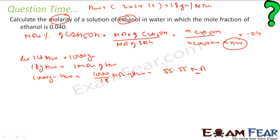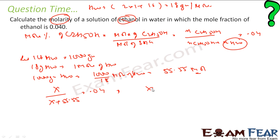We know the moles of water. Now we have to find the moles of ethanol — let that be x. So x / (x + 55.55) = 0.04. Solving this, we get x = 2.314 moles of ethanol.